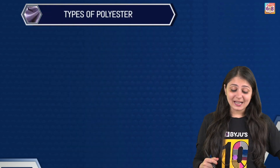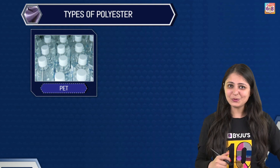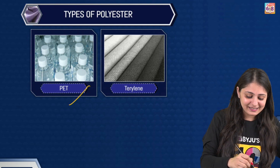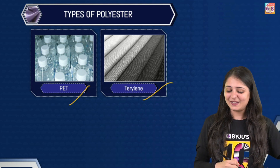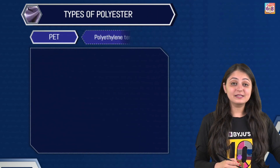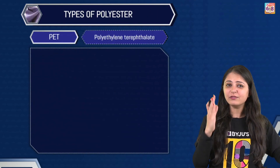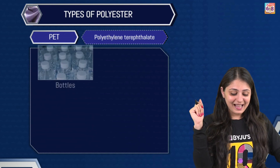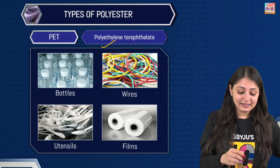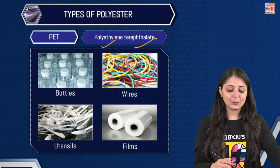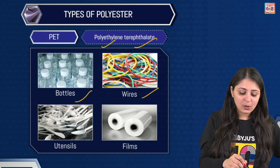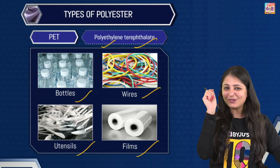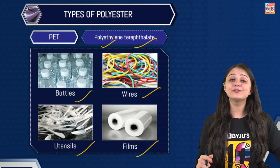Moving on to the types now. We've got two really important examples: PET and terrylene. PET is a very popular polyester and its full form is polyethylene terephthalate. It is being used to make bottles, wires, utensils, films, and many other useful products. I'm sure you've heard this term somewhere but now you know the full form as well.